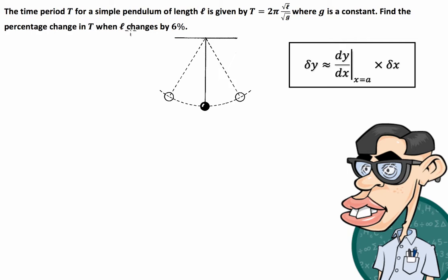Now we have to find the percentage change in T when l changes by 6%. Let's just write down the information that the question is giving us. Let's have a look at our objective function: T equals 2π square root l over square root g.